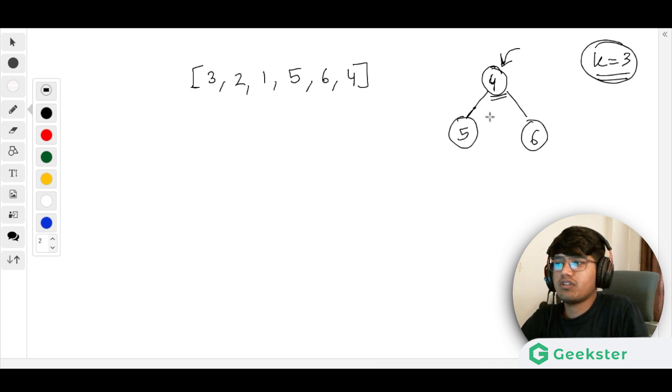Another approach could be to just sort this element and take the index, but you can see the time complexity will be something like order of n log n. We don't want that, so this is a pretty good approach and the solution will be n log k.